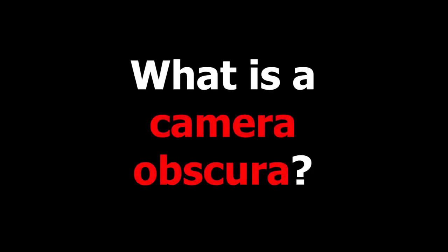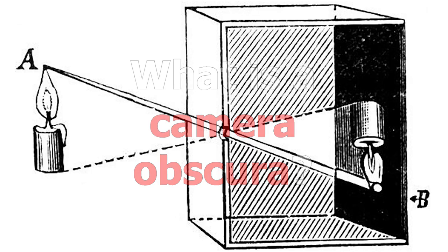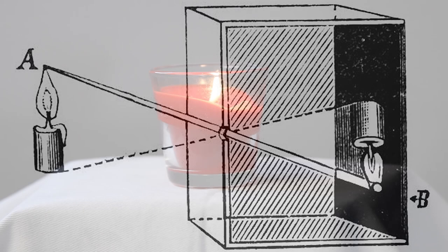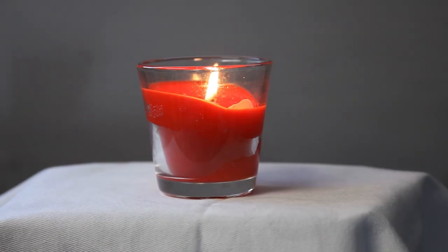The word photography comes from the Greek word photos, meaning light, and graphos, meaning drawing. Modern photography traces its roots back to the camera obscura, a drawing aid artists and scientists used to record images as early as the 11th century.